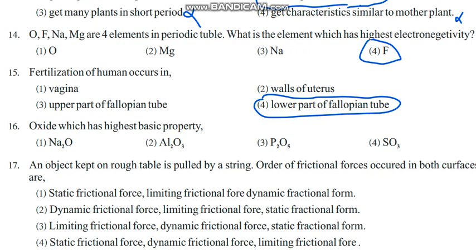Oxide which has highest basic property: when you go left to right of a period, acidity increases, basicity decreases. So sodium oxide will have highest basic property. Sodium is a metal; metallic oxides are basic. So first one should be the answer. Aluminum is amphoteric, phosphorus is a non-metal, silicon is a metalloid. Non-metallic oxide is acidic, so highest basic property is sodium oxide.